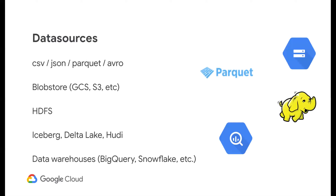Given that Spark is one of the most popular data processing frameworks and given that there are so many different data sets and file types nowadays, Spark really supports all of the most popular ones. We saw an example of a CSV file. It also supports JSON, Parquet, and Avro. It supports all of the popular blob stores including GCS, S3, and Azure. Of course it supports HDFS, given that it was originally built on top of Hadoop. It also supports some of the newer file types such as Iceberg, Delta Lake, and Hoodie. And it can integrate with all the popular data warehouses including BigQuery, Snowflake, and Redshift.